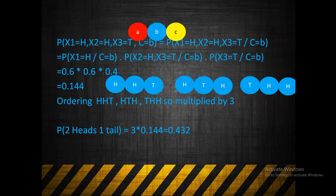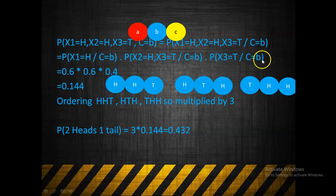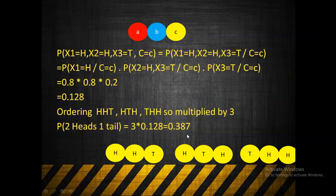Similarly for coin B: P(X1=H | Coin=B) = 0.6, P(X2=H | Coin=B) = 0.6, P(X3=T | Coin=B) = 0.4. Multiplying gives 0.6 × 0.6 × 0.4 = 0.144. For two heads and one tail with three possible arrangements, the total probability is 0.144 × 3 = 0.432.